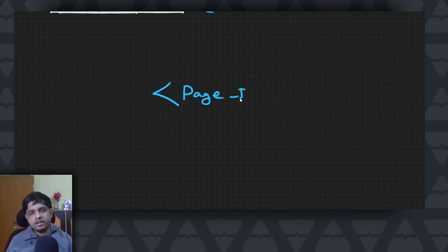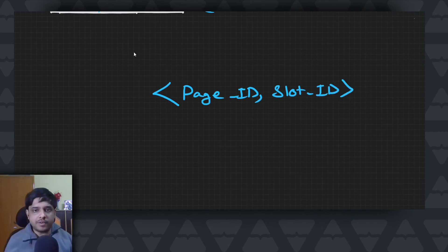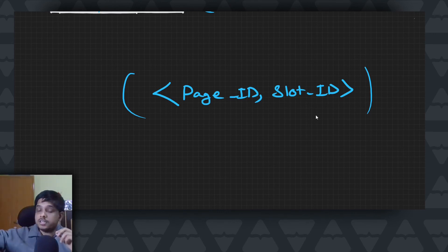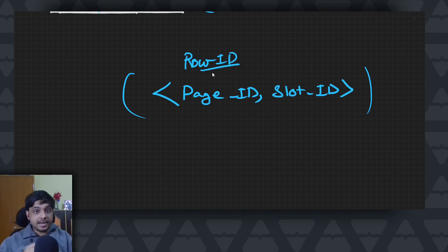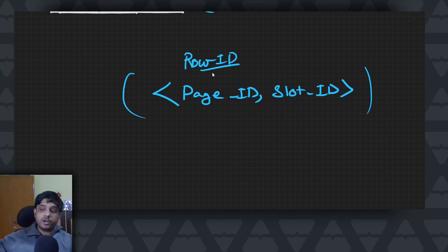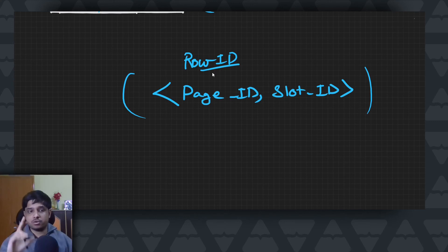Each row in the database can be located with two coordinates: first, the page ID — which page it is stored in — and second, the slot ID. These two values combined can locate a tuple exactly on disk. This is used as a pointer called a row ID, though it may have other names. This row ID is especially useful for things like indexing, where we need to point to an exact record. Indexing is out of scope for this video but we'll cover it later.